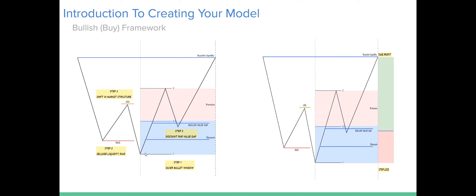Third step: we're looking for displacement — energetic displacement higher, shifting above a previous high. We have a lower low, lower high, lower low. We know that this lower low is just a raid on sell-side liquidity. Price is then displacing above a lower high, which is a shift in market structure, telling you it's no longer bearish — we're going into an uptrend. So from this dealing range low to wherever this high ends up, that is your dealing range. You're looking to see if there's a fair value gap inside of a discount — buying inside of a discount, not a premium.